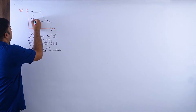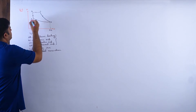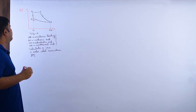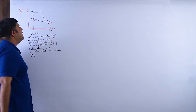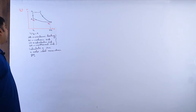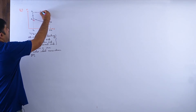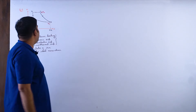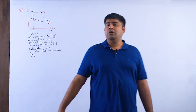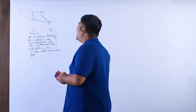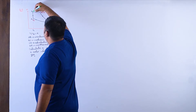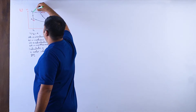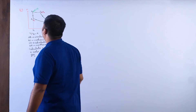Let the temperature at point A be T_not. Since D to A is isothermal, the temperature at point D is also T_not. The given ratio TC/TA = 4 means the temperature at point C is 4T_not. The challenge now is to find the temperature T' at point B.